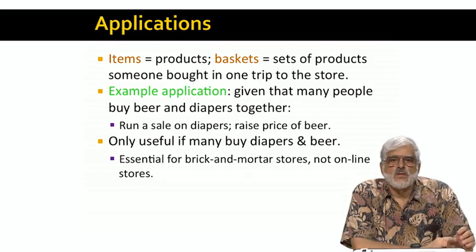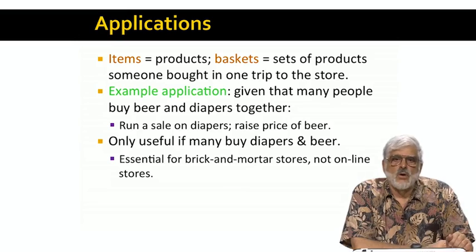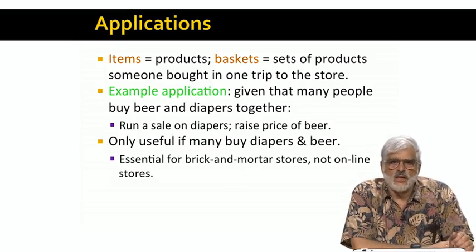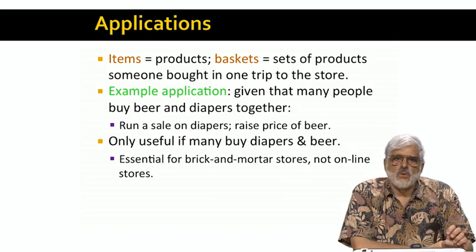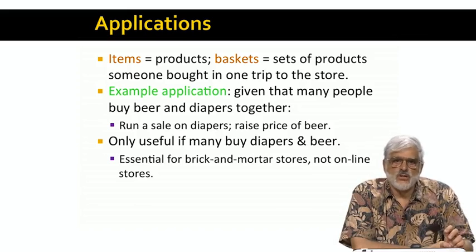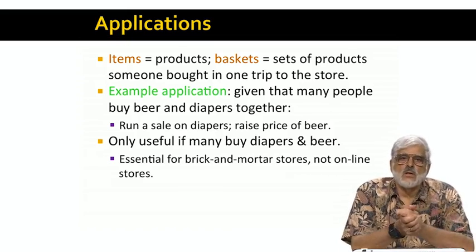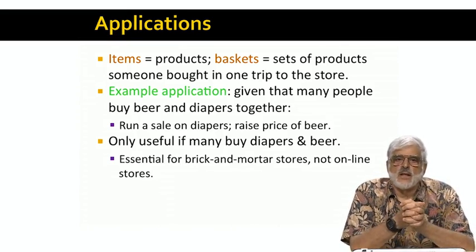I just want to point out that these techniques are appropriate mainly for brick and mortar stores. A brick and mortar store needs to know that lots of people buy diapers and beer, or else they're wasting time and money optimizing the sale of something that is rarely bought anyway. That viewpoint matches well with the idea that we're looking for high frequency, rather than correlation between rarely purchased sets of items. Online stores, on the other hand, do not need to rely on high frequency, since they can tailor their store differently for each customer. Thus, entirely different forms of analysis are needed for online stores, and we'll cover that as a separate topic.